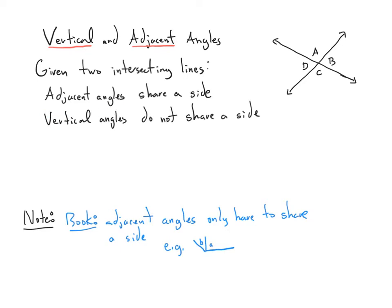Adjacent angles are two angles that share a common side. For example, the angles adjacent to A are B and D. The angles adjacent to B are A and C, since A and B share this common side, and angles B and C share that common side.